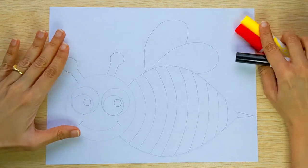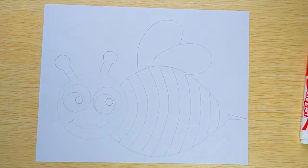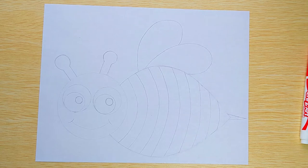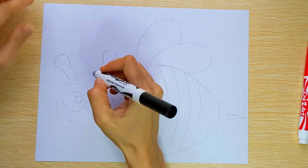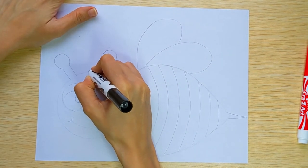I have drawn a picture of a bee with a pencil, but I will be outlining it with a black marker so you can follow the drawing along with me. So let's get started.